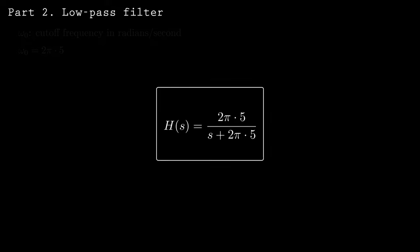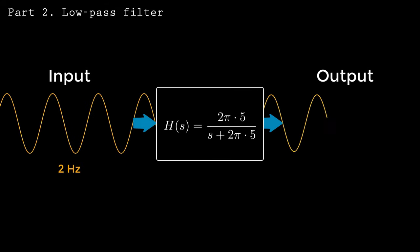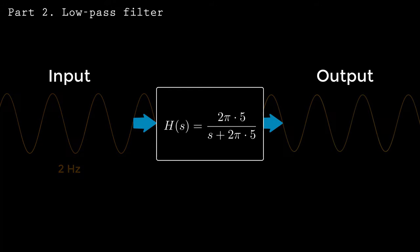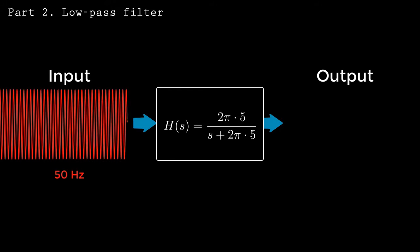Let's see if it works. When I pass a 2 Hz signal through the filter, it is largely unaffected. However, when the 50 Hz signal is filtered, its magnitude is substantially reduced.